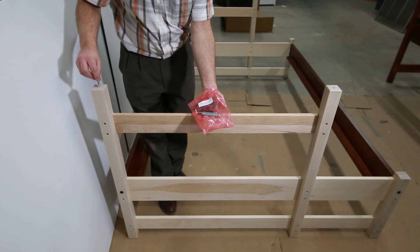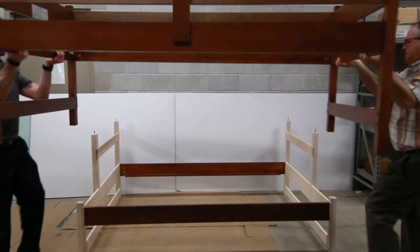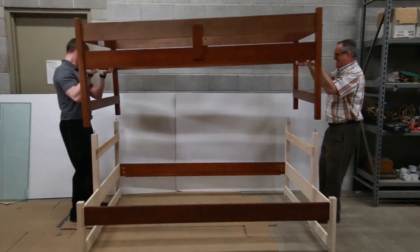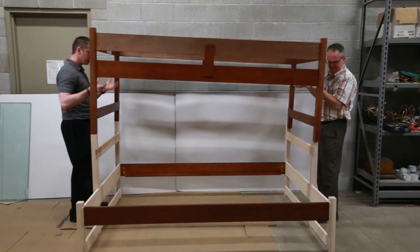Insert a connector pin in each of the four corner posts. Lastly, with the help of another, lift and place the assembled upper unit on top of the lower, lining up the pre-drilled feet holes with the connector pins.